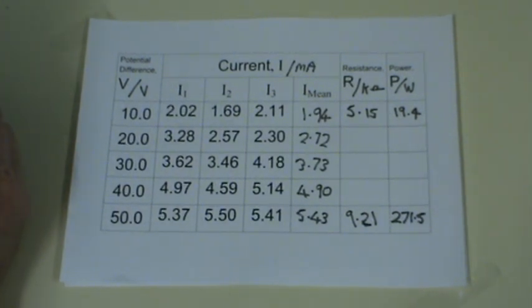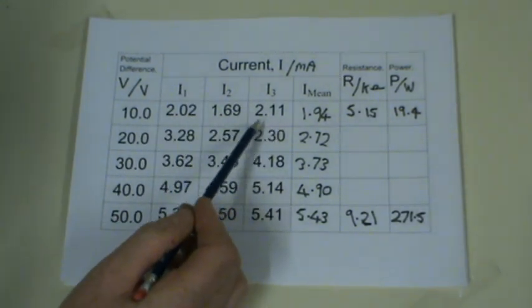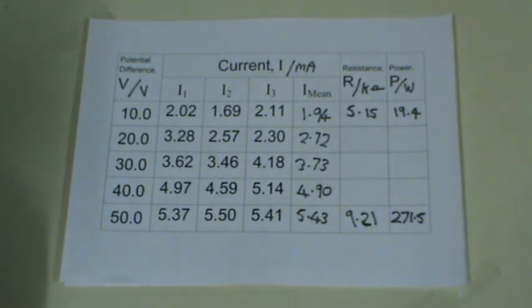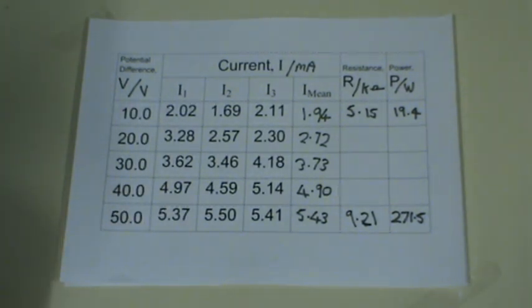Having calculated the gradient of the graph, the examiner will usually test how well you understand uncertainties. You can calculate uncertainties either from looking at the size of the range of the data or by looking at the precision of the data you've recorded.